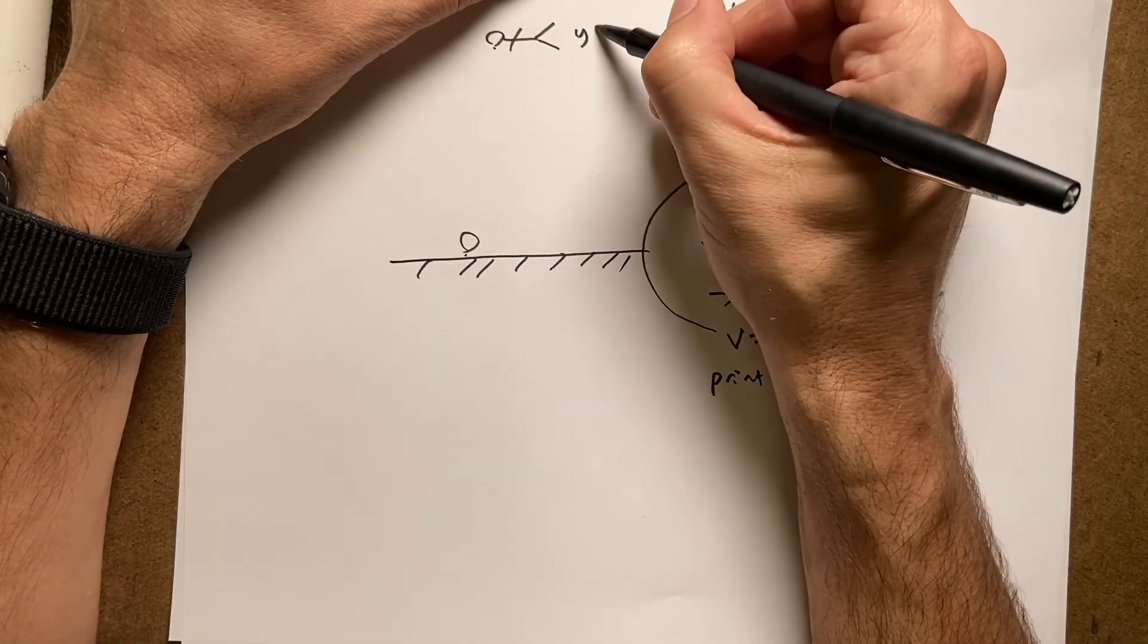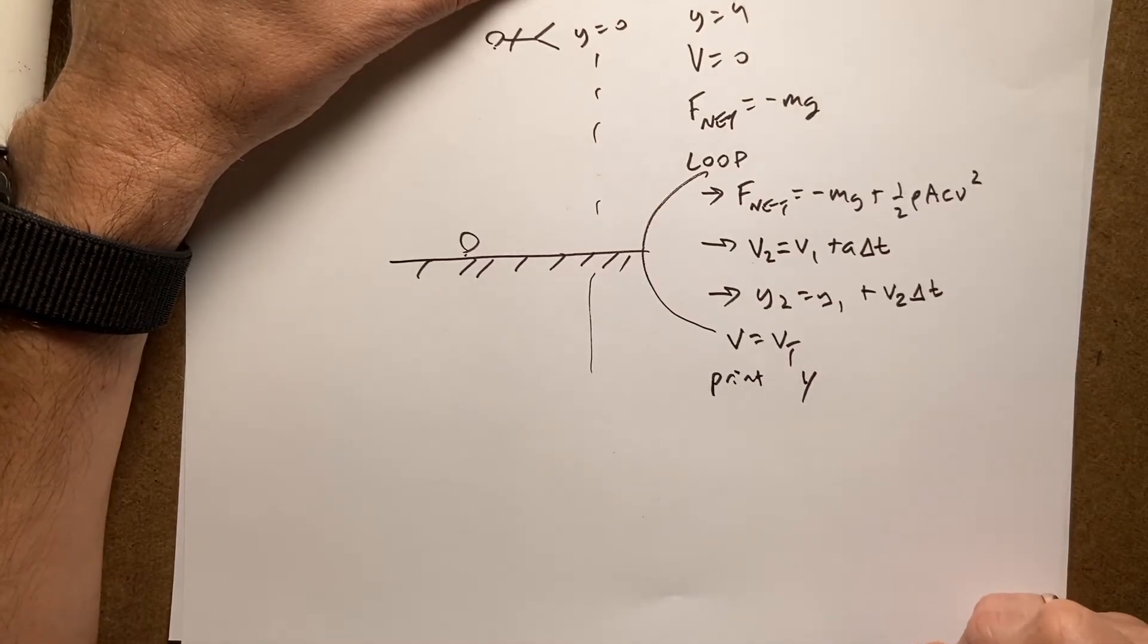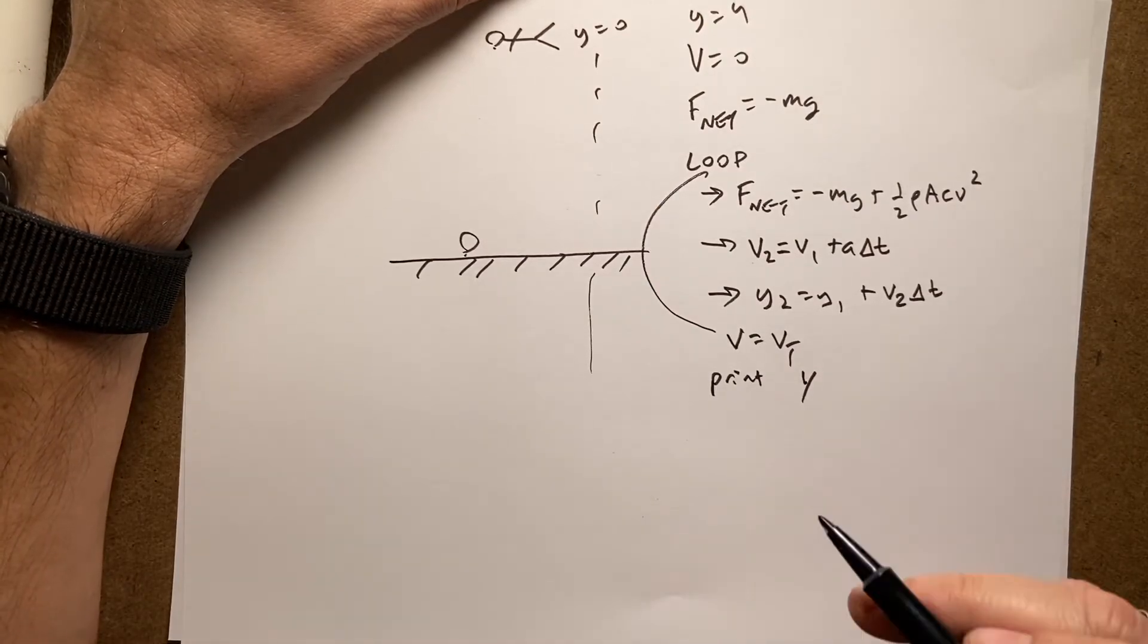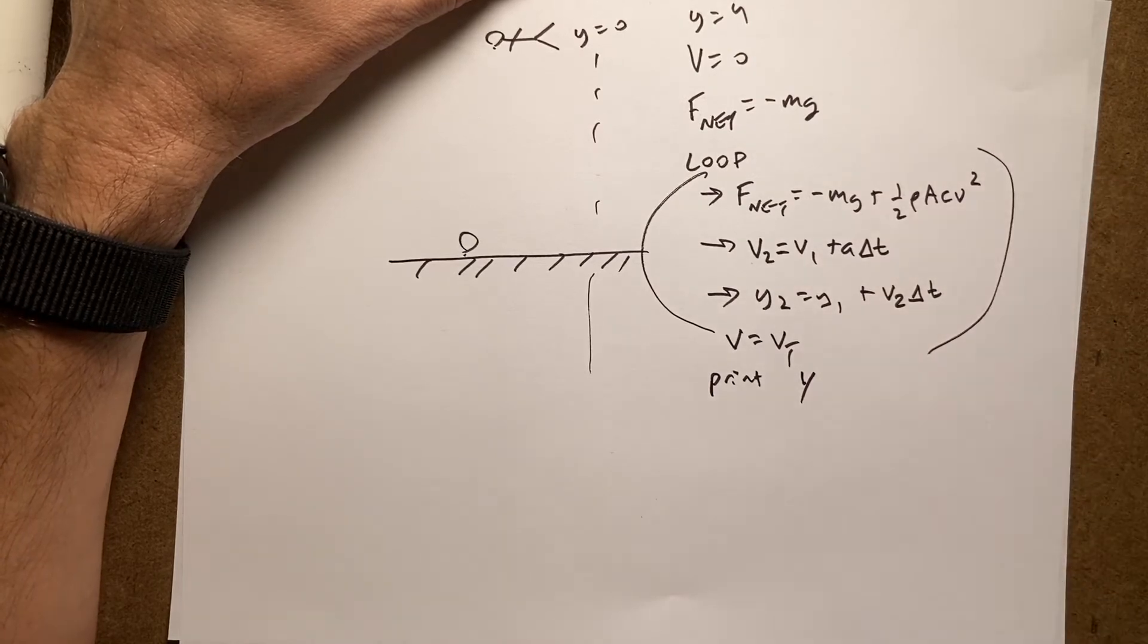So I can actually start up here as y equals zero and fall this way. There's no ground. I'm just going to keep falling until I reach the terminal velocity. So, of course, since this is a loop, I need to do this with Python. And that's what I'm going to do next.